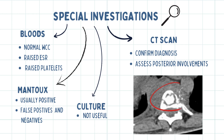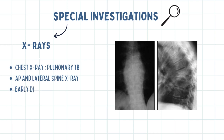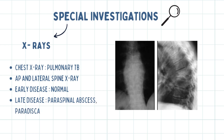A CT scan is indicated to differentiate early TB from pyogenic spondylitis, and preoperatively it is the best way to assess involvement of the posterior elements. A blood culture is not very useful. X-rays of the chest and spine can be done. A chest X-ray may confirm pulmonary TB, and AP and lateral spine X-rays may be normal in early disease, but in late disease typical features are paraspinal abscess, paradiscal vertebral body collapse, and kyphosis.